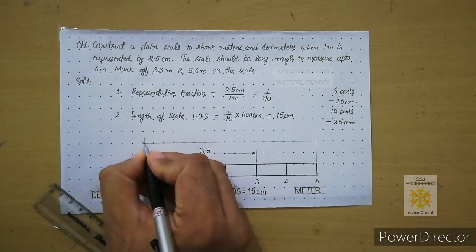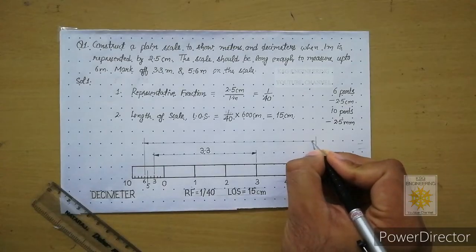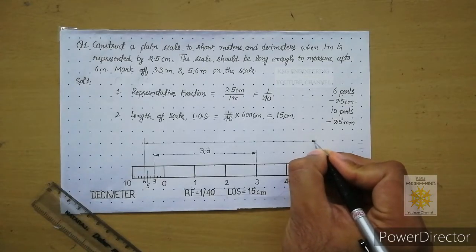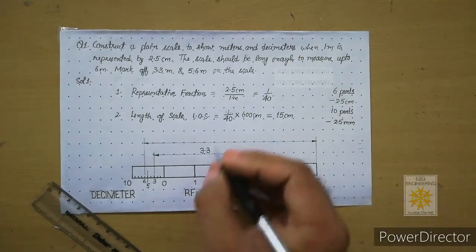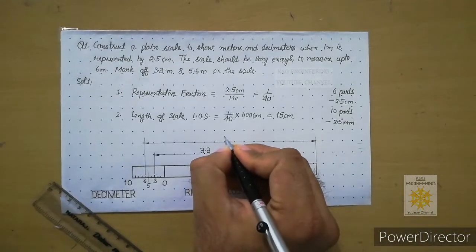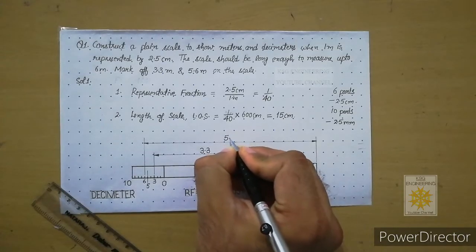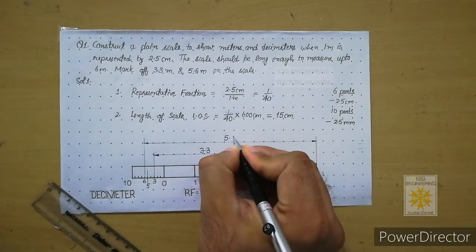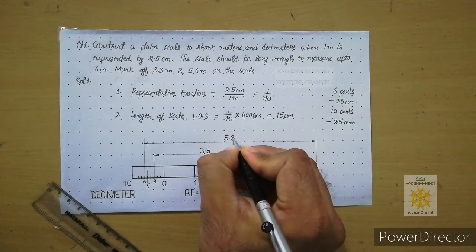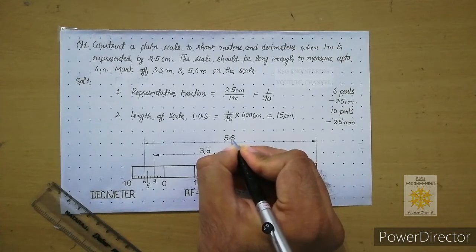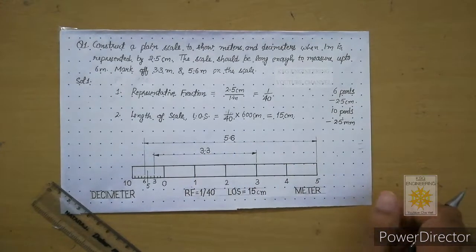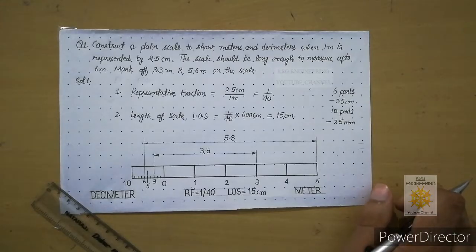Add closed filled arrowheads on both sides in 3:1 ratio, then on top of the dimension line write 5 in gothic style followed by 0.6 — giving 5.6.